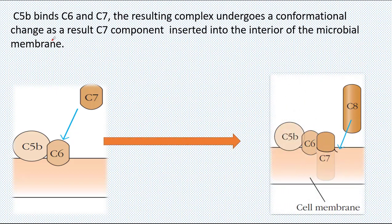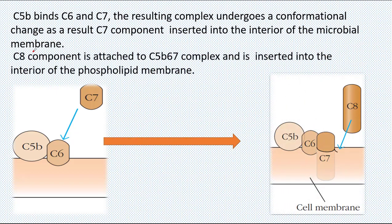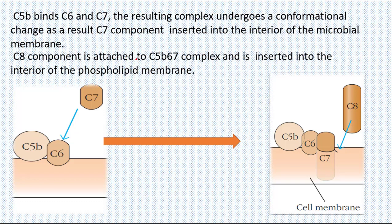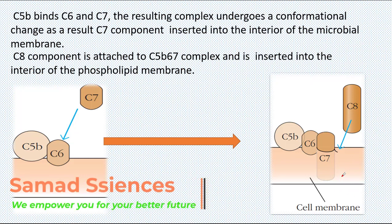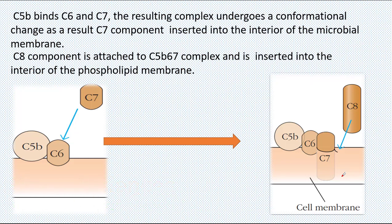As a result of the conformational change, the C7 component is inserted into the interior of the microbial membrane. This complex also acts as a receptor for the C8 component. In the next step, C8 attaches to the C5b-C6-C7 complex and is inserted into the interior of the phospholipid membrane of the pathogen. C8 is a trimer of alpha, beta, and gamma chains. The beta chain binds the C5b-C6-C7 complex, while the gamma and alpha chains are inserted into the interior of the pathogen surface.